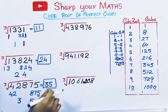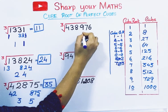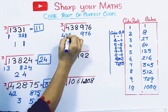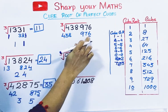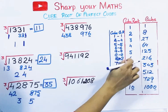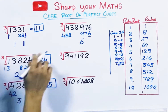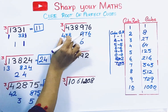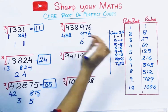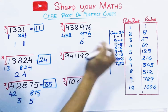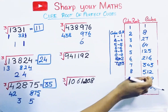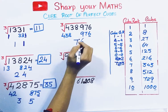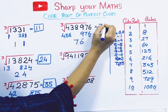Next number: divide into groups — last 3 digits one group, remaining digits another group. Check the unit digit — it ends with 6. If the cube ends with 6, the cube root ends with 6. Take the left group, 438. 438 is close to 512, but we take the cube less than and closest to it, which is 343. Its cube root is 7. So the cube root of this number is 76.